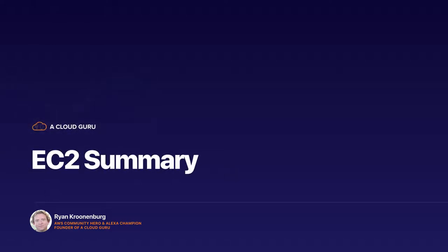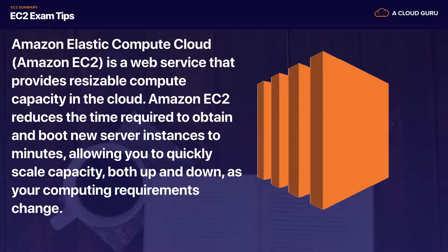Hello Cloud Gurus and welcome to the EC2 summary. Congratulations, you're at the end of another section. The first thing we learned about was what EC2 is — basically resizable compute capacity in the cloud, a way of provisioning virtual machines. It reduces the time required to obtain and boot new server instances to minutes rather than hours or days, and it allows you to quickly scale capacity both up and down as your computing requirements change.